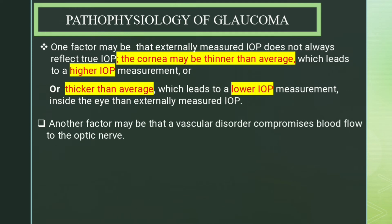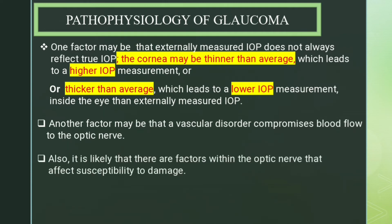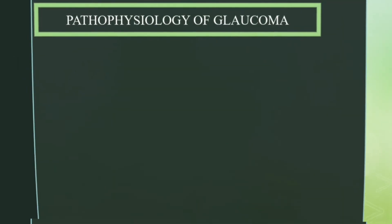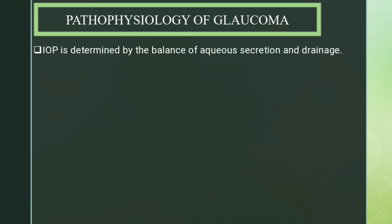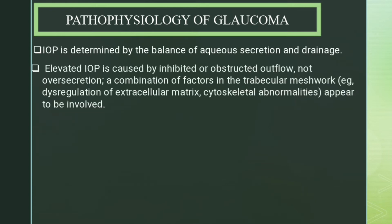Another factor is that a vascular disorder may compromise blood flow to the optic nerve. It is also likely that factors within the optic nerve affect susceptibility to optic nerve damage. Intraocular pressure is determined by the balance of aqueous humor secretion and drainage. Elevated intraocular pressure is caused by inhibited or obstructed outflow, not over-secretion.